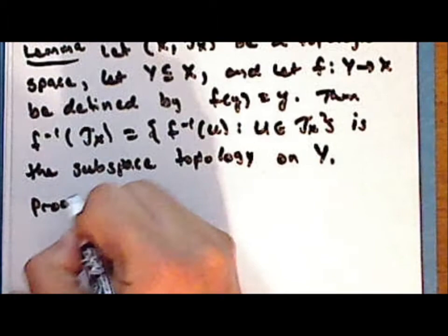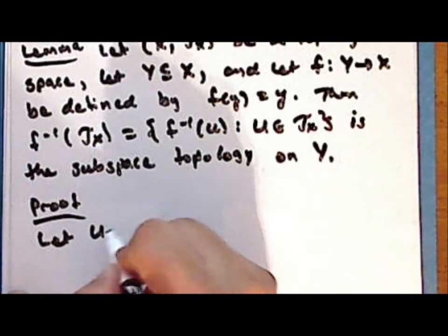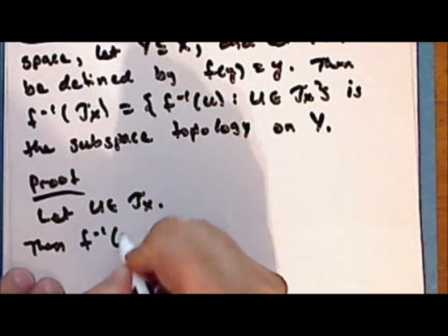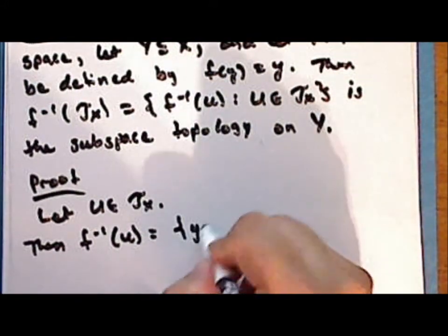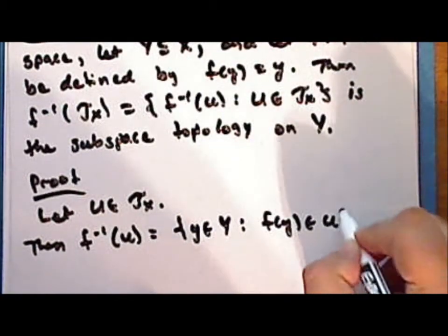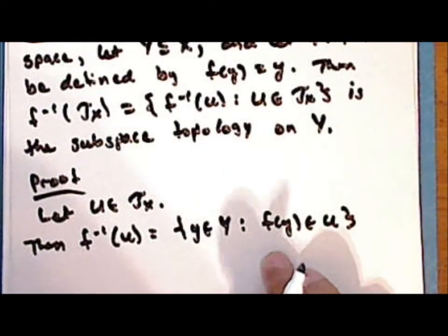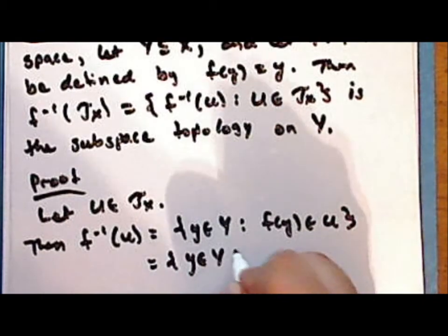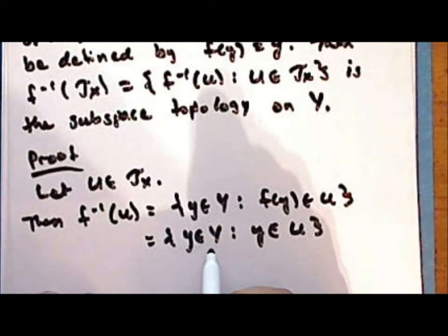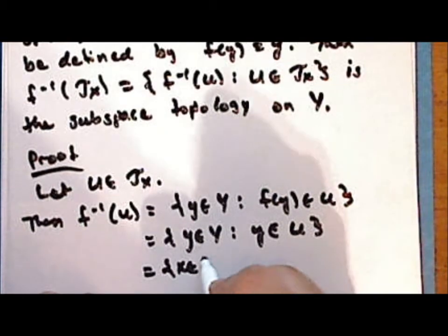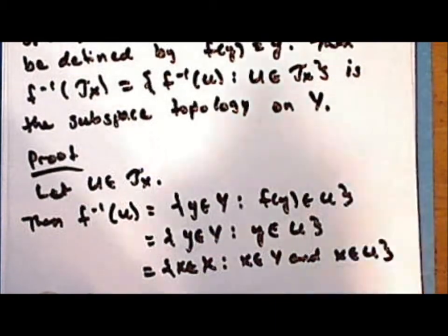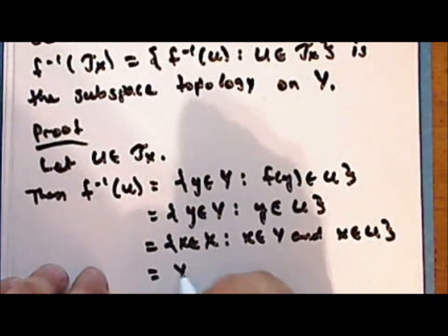Proof. Let u be a set in the topology on x. Then the inverse image of the set u is the set of all those points in y such that f of y is in the set u. Now since f of y equals y, this is the set of all points in y such that y is in the set u. And as y is a subset of the space x, this is the set of all points in x such that that point is in y and in u. And so this is the intersection of y with u.